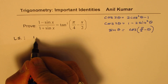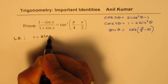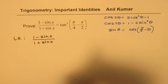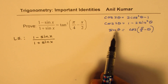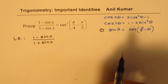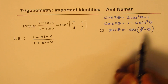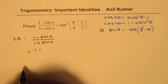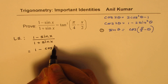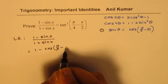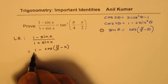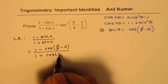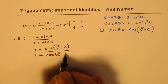The left-hand side given to us is 1 minus sin x over 1 plus sin x. Now, sin x can be written as cos of pi by 2 minus x. So I write the numerator as 1 minus cos of pi by 2 minus x, and the denominator as 1 plus cos of pi by 2 minus x.